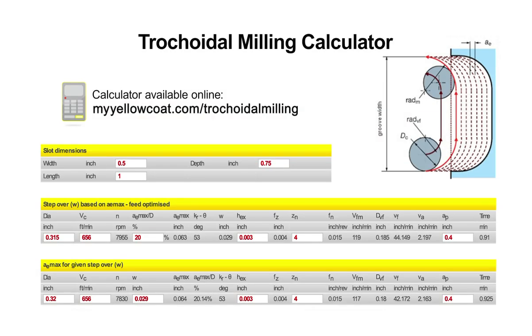This trochoidal milling calculator is available for use from Sandvik Coromant. Populate the white fields with machining data and the calculator will optimize toolpath based on either max radial engagement, AE max, or radial step over, W. Vital data such as feeds and speeds and estimated cut time are also output.